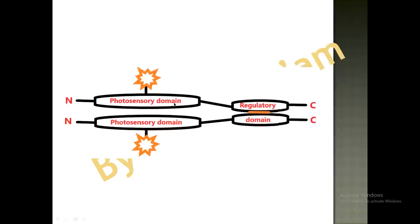Looking at the structure of phytochrome, you can see there are two domains: one is the photosensory domain and another is the regulatory domain. There are two polypeptide chains, so phytochrome occurs as a dimer inside the plastids. The photosensory domain contains the chromophore which absorbs light.